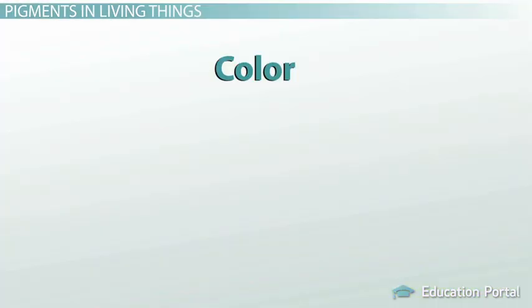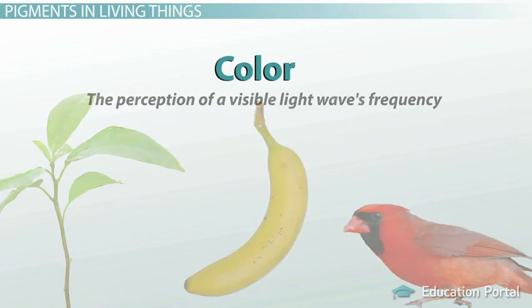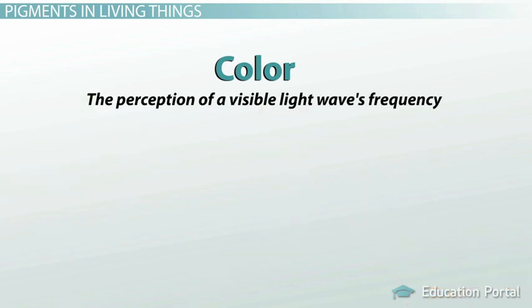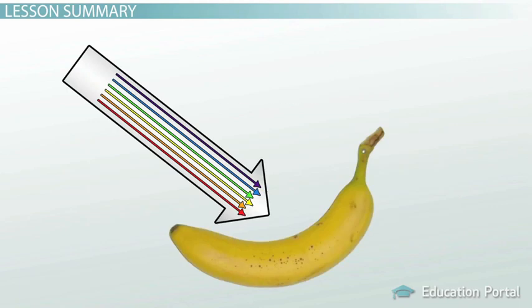The common theme here is that color is not something that exists in objects. We perceive things to be a certain color because of the way our eyes sense the various frequencies of light reflected off of them. Objects that appear red do not contain the color red — they only contain the molecules that affect the visible light waves so that only red is reflected. Therefore, color is the perception of a visible light wave's frequency. White light is a combination of all the frequencies of visible light. When white light strikes an object, each individual frequency of light is transmitted, reflected, or absorbed depending on the properties of the surface molecules.